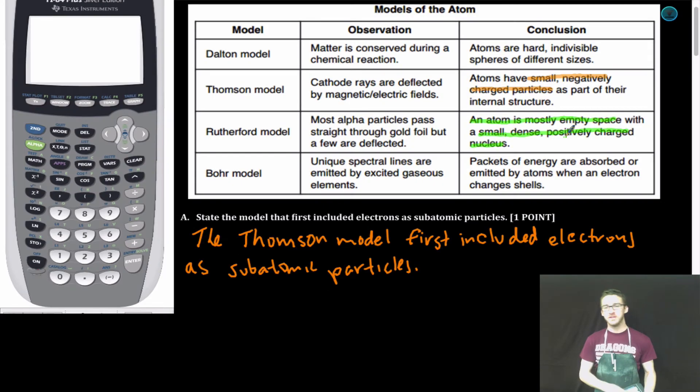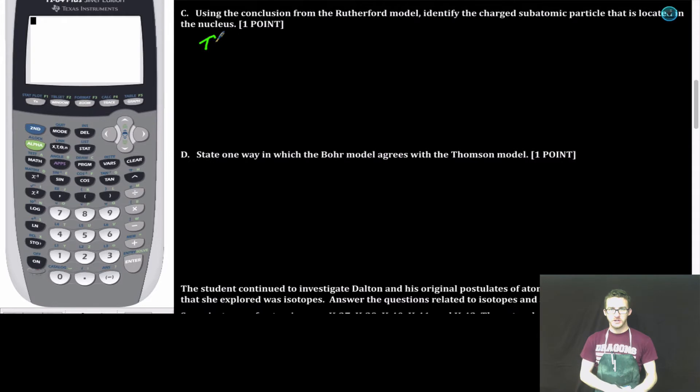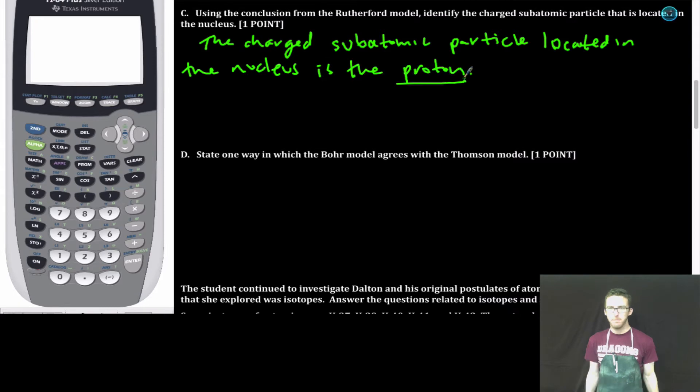You should know that nucleus is a small, dense, positively charged region. But which of those subatomic particles is the positively charged one? The charged subatomic particle located in the nucleus is the proton. The neutron has no charge.